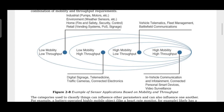Low mobility, high throughput applications include digital signage, telemedicine, traffic cameras, and connected electronics. Finally, low mobility, low throughput devices are found in industrial, environmental, home, and retail applications — such as pump and motor operation in industrial settings.